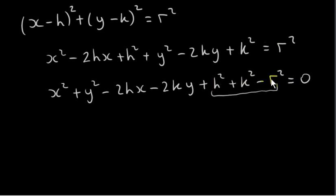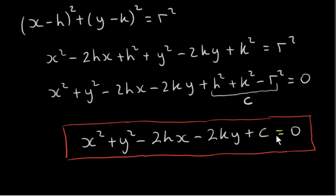Now, h, k, and r are numbers — they are givens. We're given the center h, k and the radius of a circle, and then we usually go and get the equation. So if we put these three numbers together, we get some new number that we will call c. So now this is the expanded form of the equation of a circle. We have to keep in mind that c is h squared plus k squared minus r squared.